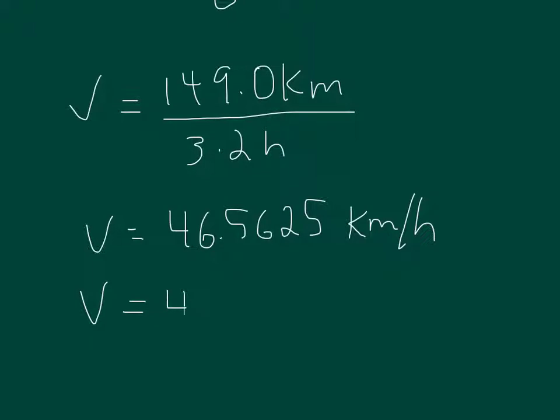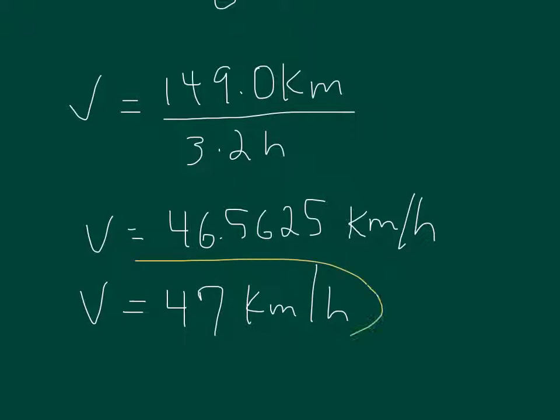Rounding 46.5625 to two significant digits gives us 47 kilometers per hour. That is our final answer to the correct number of significant digits.